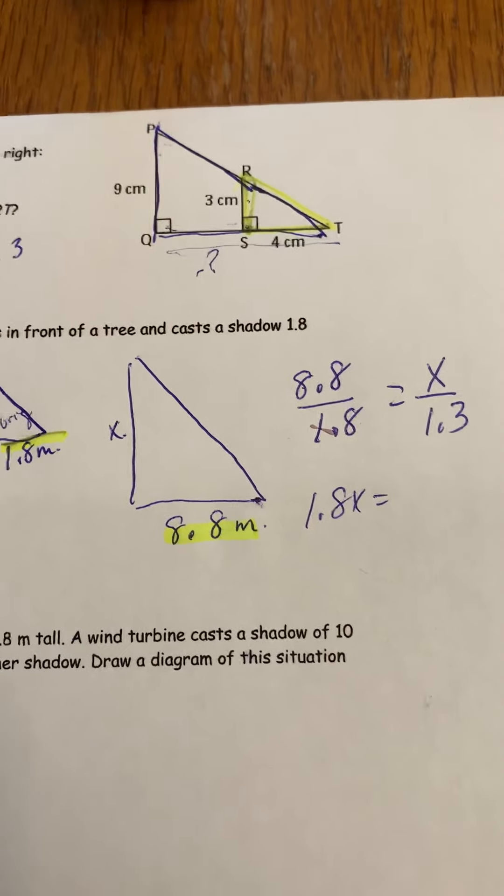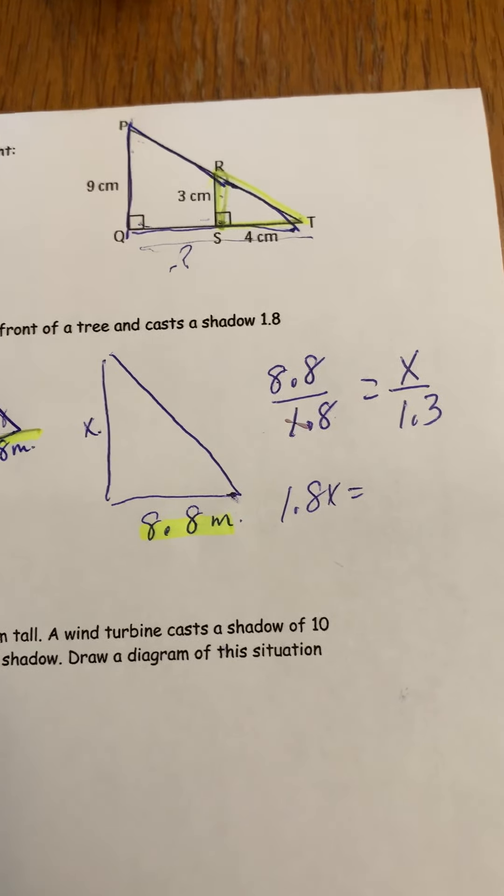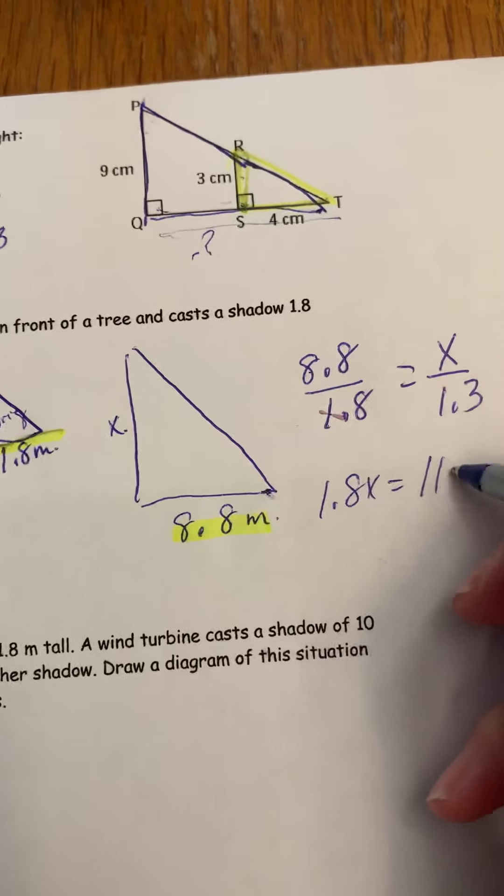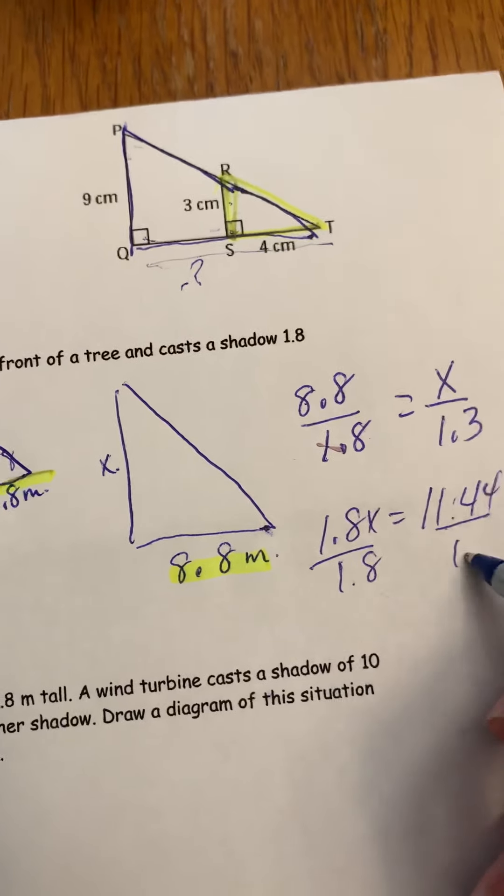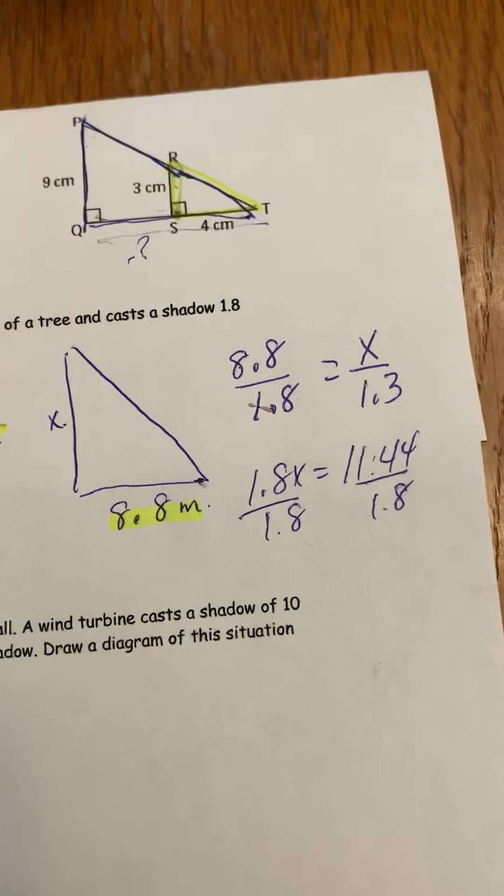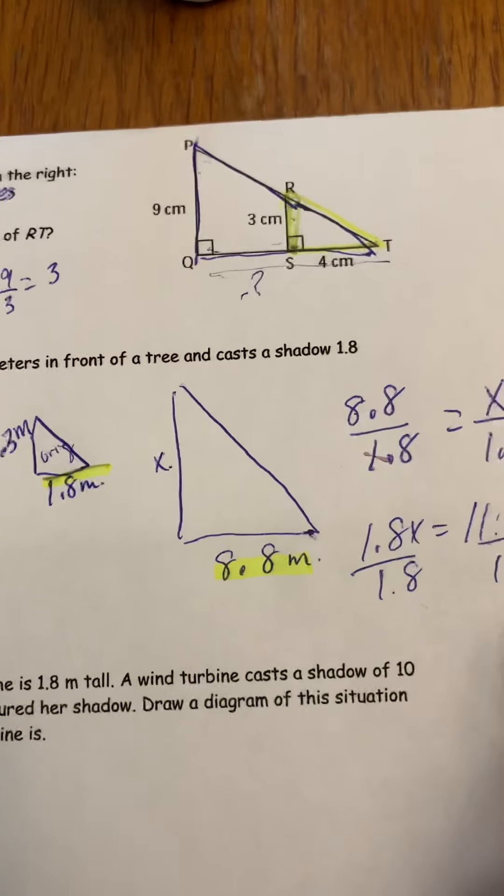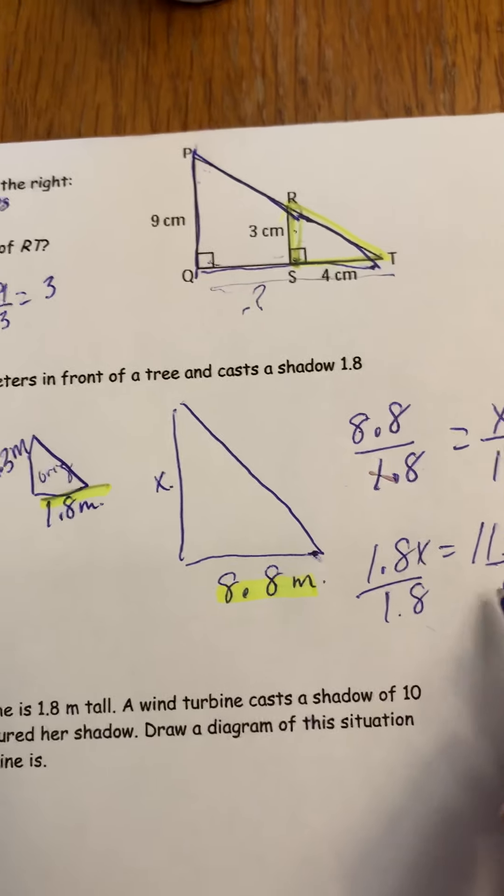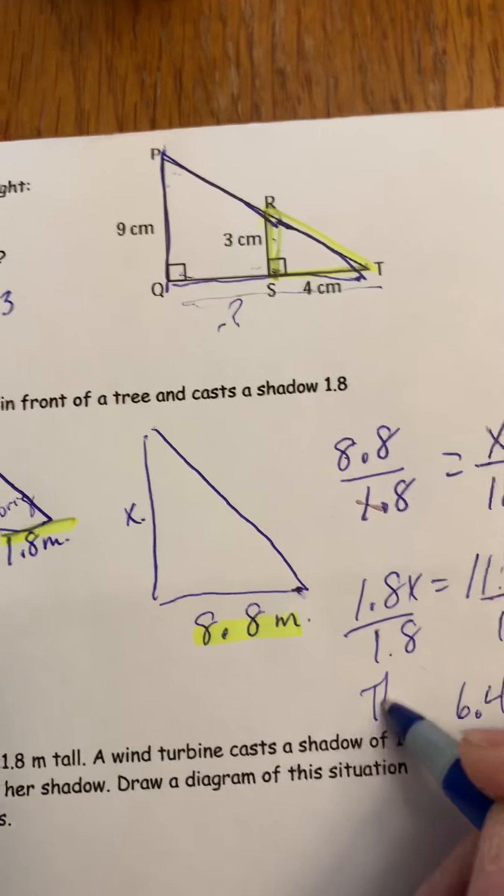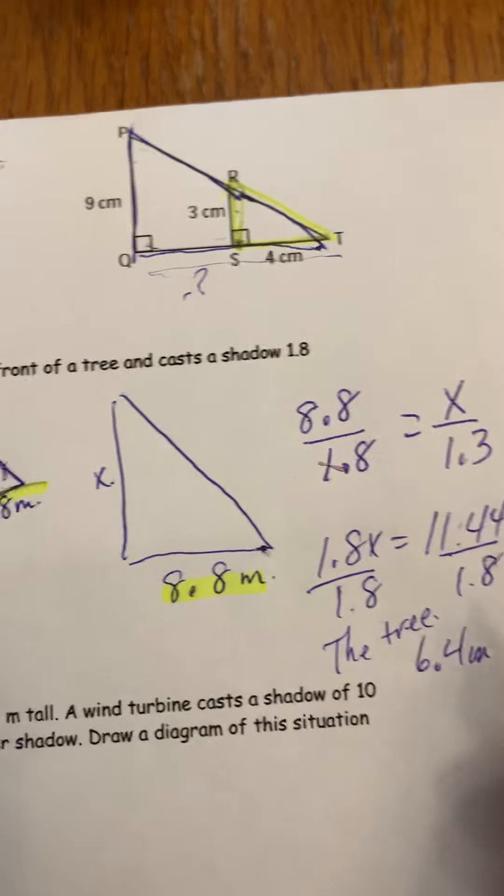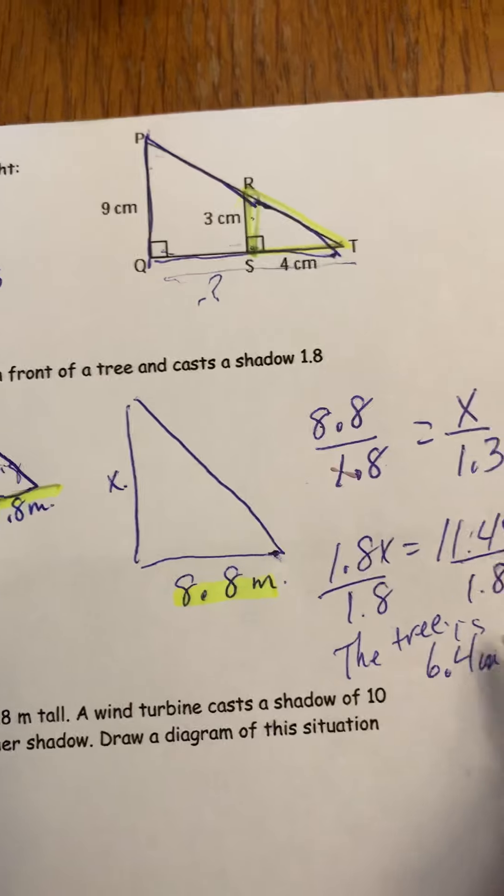So now what you're going to do is you're just going to take your calculator. I don't expect you to do this the long way. If you want to show off you can. 11.44 tenths of a meter, we're going to divide both sides by one and eight tenths, and you should get that the tree is around six and four tenths of a meter tall. And remember what I said, whenever we have a word problem, the tree is six and four tenths of a meter tall.